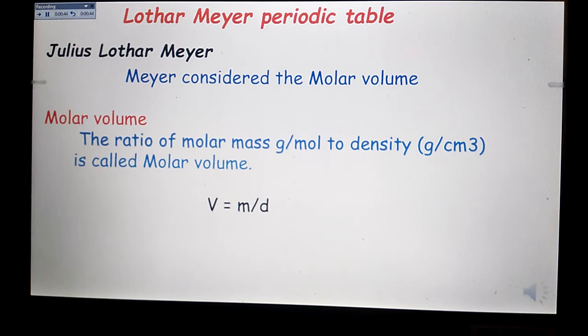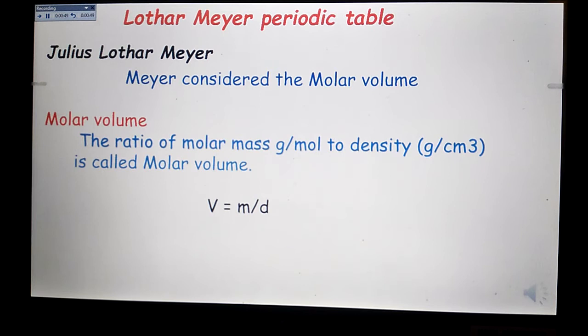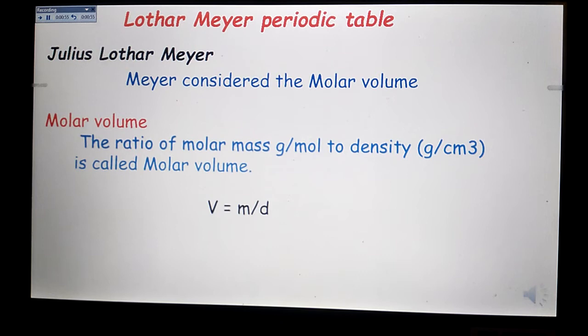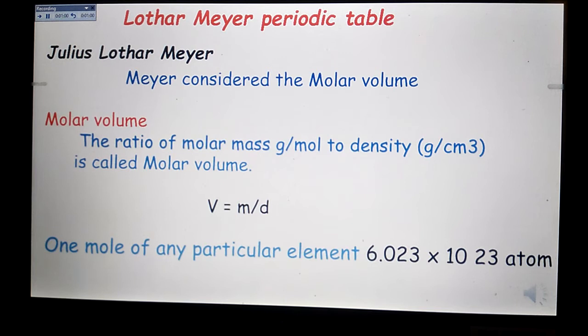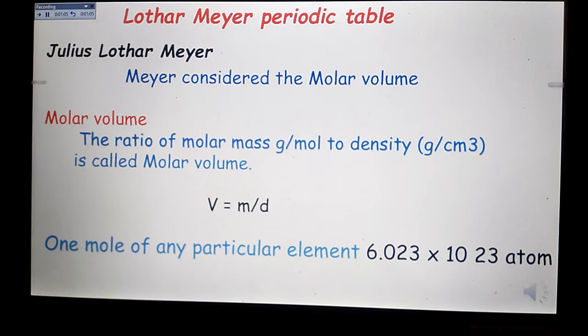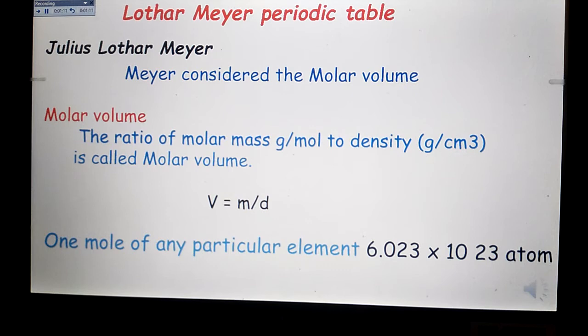Molar volume is inversely related to density. Density depends on size of atom and packing of atoms. Greater the density, smaller will be the volume. One mole of any particular element contains 6.023 multiplied by 10 raised to power 23 atoms. This number is also known as Avogadro's number.